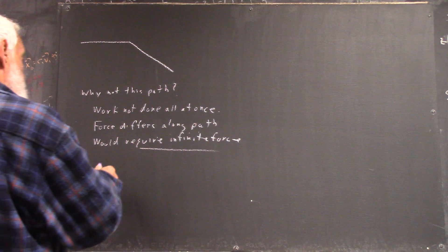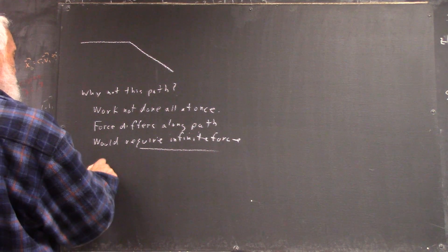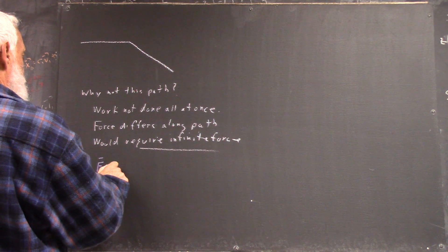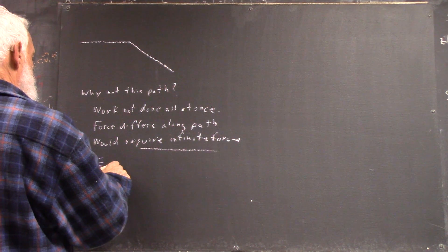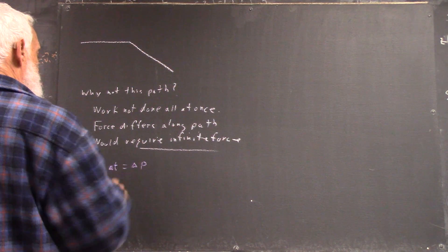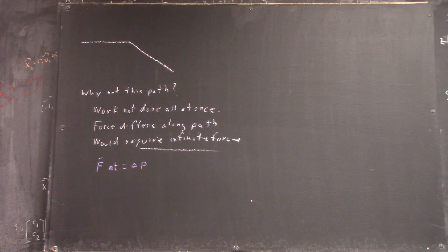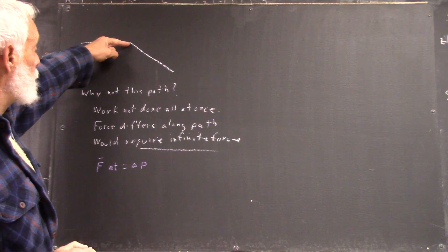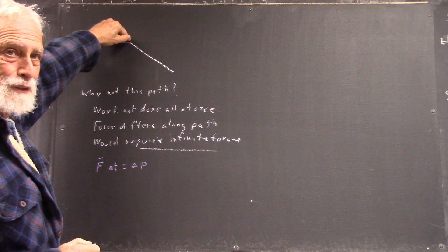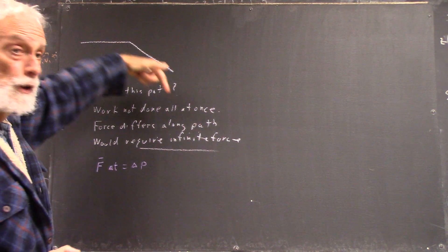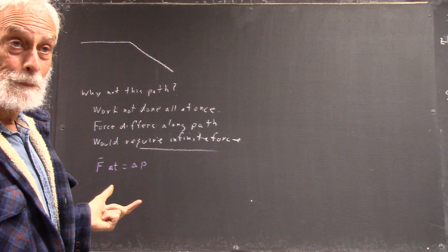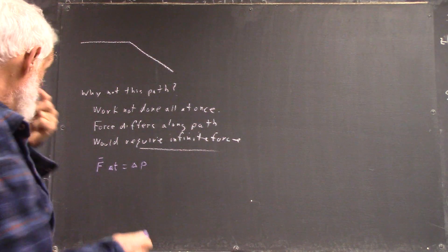And in impulse momentum, you have average force times delta T equals delta P. Now, if all the momentum change occurs right at this point and the thing is moving, that means that it occurs instantaneously, right?